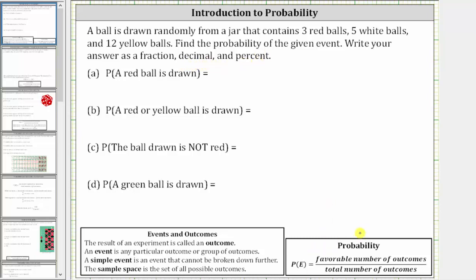The probability of an event E is equal to the favorable number of outcomes divided by the total number of outcomes.